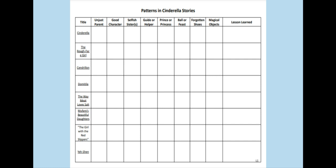As you look at this, I want you to determine if Cinderella has an unjust or unfair parent and if so, which one. If she has a good character. If she has selfish sisters and if so, if they're named or a brief description. If she has guides or helpers. If she meets a prince or a princess. If she attends a ball or a feast. If she has forgotten shoes and if so, which kind. And if she has magical objects.